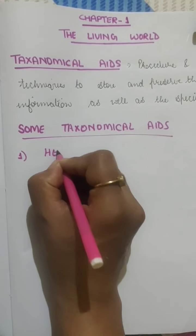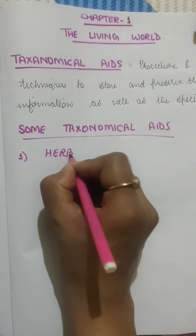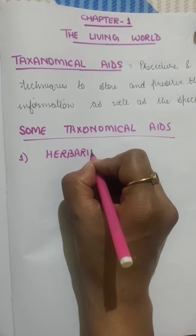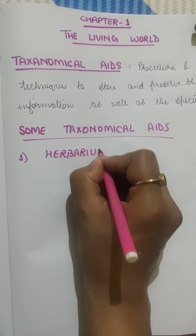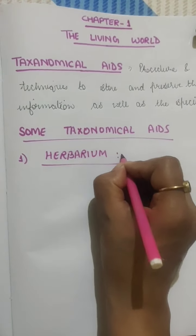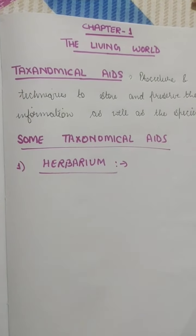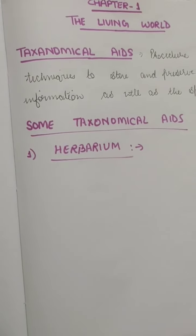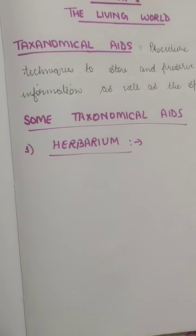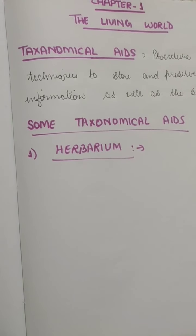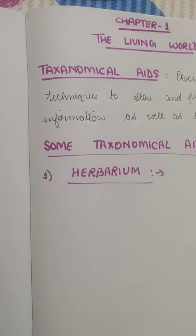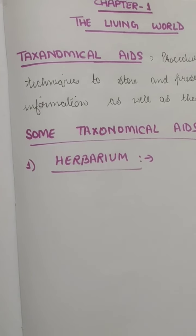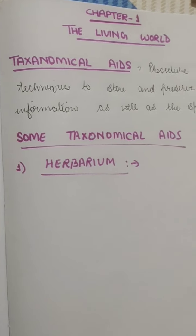One of the taxonomical aids is herbarium. Herbarium is a kind of storehouse of collected plant specimens that are arranged and preserved in the form of sheets.